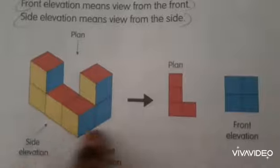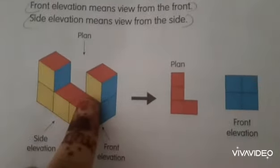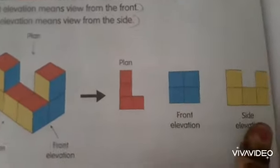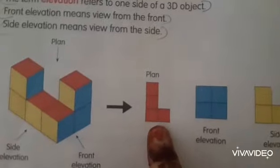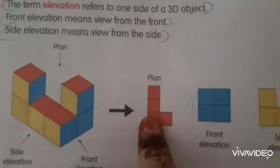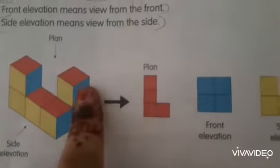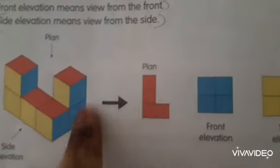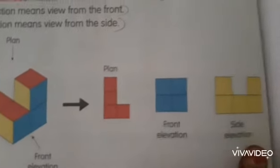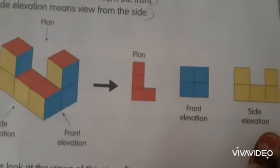Here, the 3D object is given and this is the 2D representation. The top view is called the plan, the front elevation is this — if we are looking from the front, so front elevation is this — and the side elevation is this.